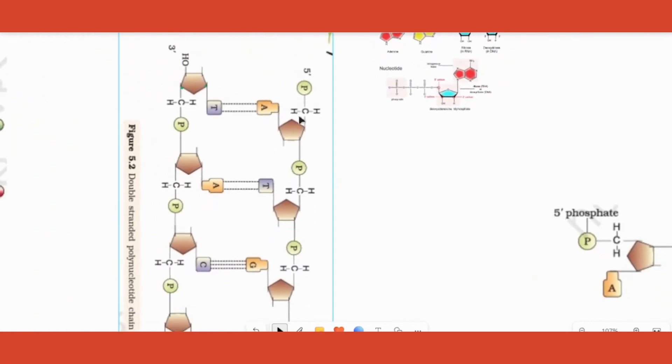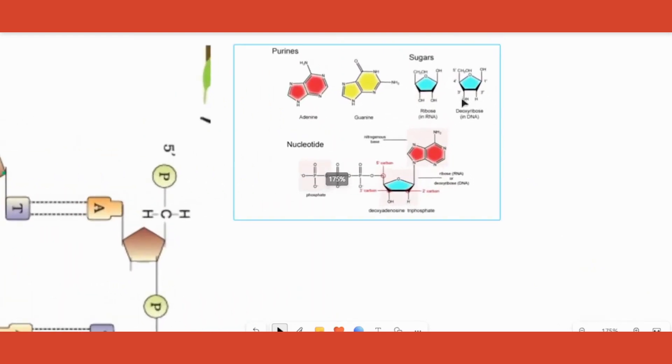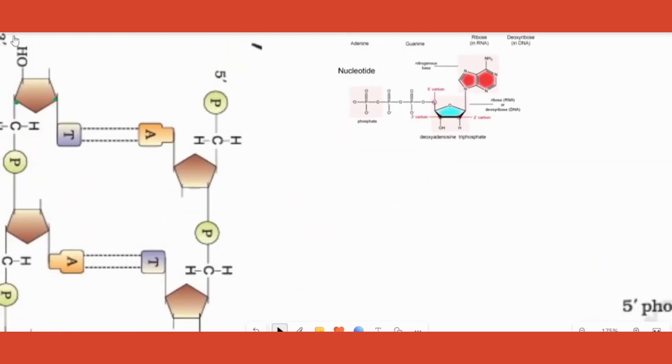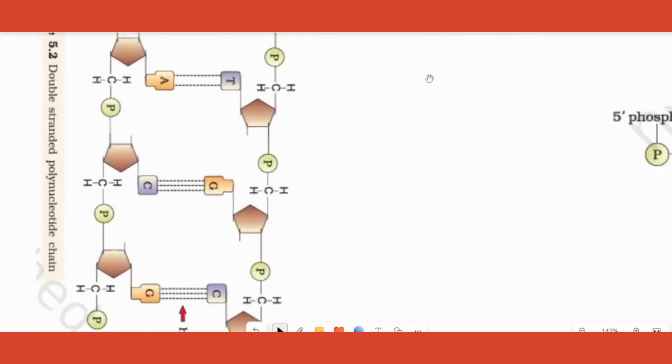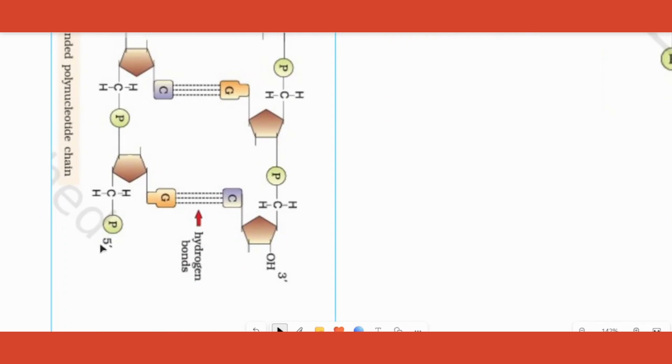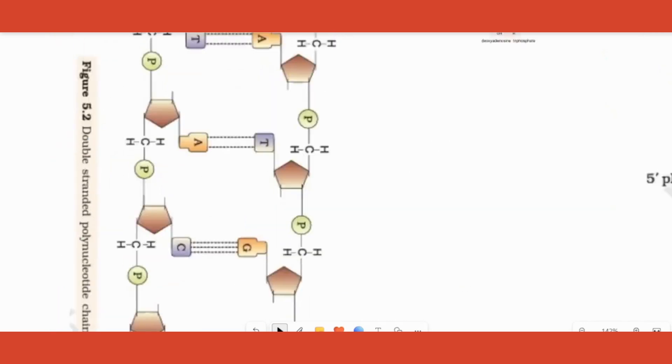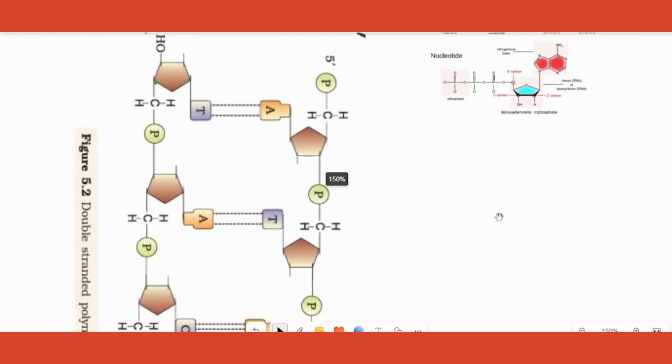That's why when we look at one chain, in the first chain if you notice, the third position where OH is, OH is here. That is kept free in the first chain, one end. Other end of the same chain, the phosphate which is there in the fifth position is free. In the opposite direction, the opposite will happen, that is third position will be free in this end and fifth position will be free with the other end.